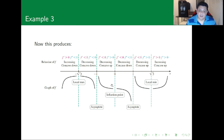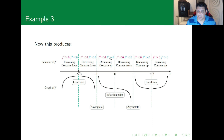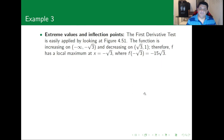Both ±√3 are critical points. At -√3 the second derivative is negative, indicating a local maximum, and at √3 the second derivative is positive, indicating a local minimum. At x = 0 there is no sign change in the first derivative, but there is a sign change in the second derivative, confirming that x = 0 is an inflection point.